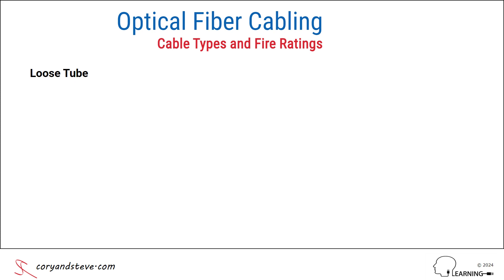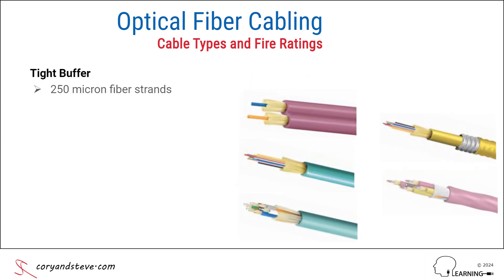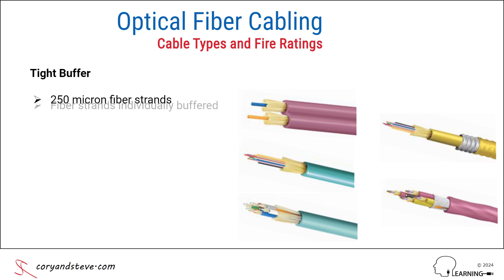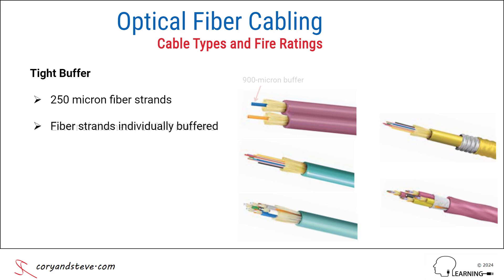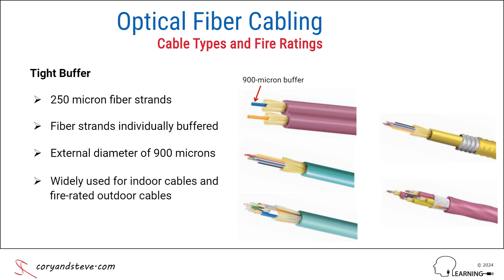The second type of cable construction is tight buffer, where the 250 micron fiber strands are individually buffered or tightly covered with a protective layer, making their external diameter 900 microns, or just under one millimeter, which is equal to 1000 microns. This construction is widely used for indoor cables, as well as for fire-rated outdoor or campus cables, which can be extended and routed within buildings after entry, without the need to transition to a fire-rated cable in the entrance room or entrance space.